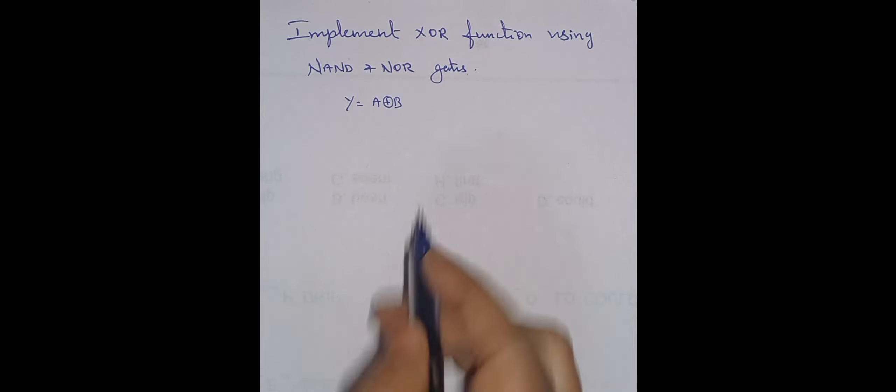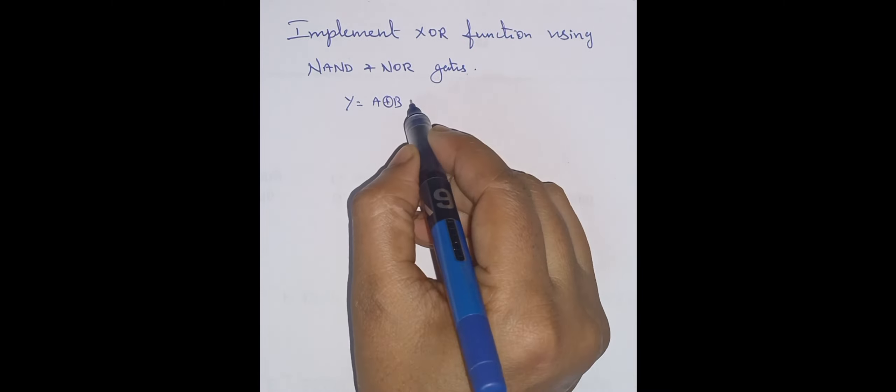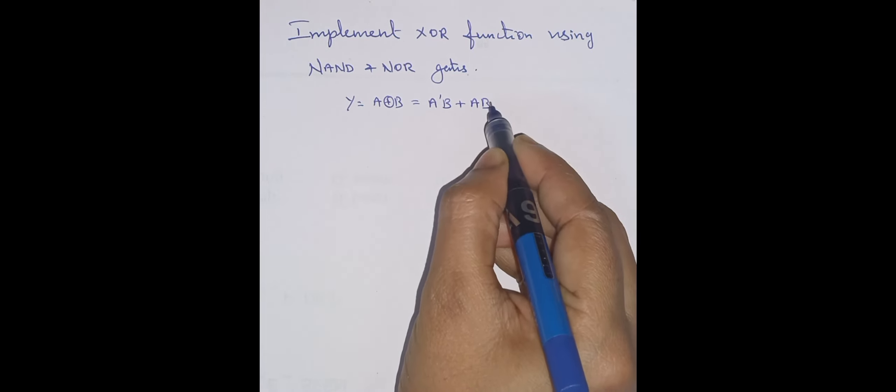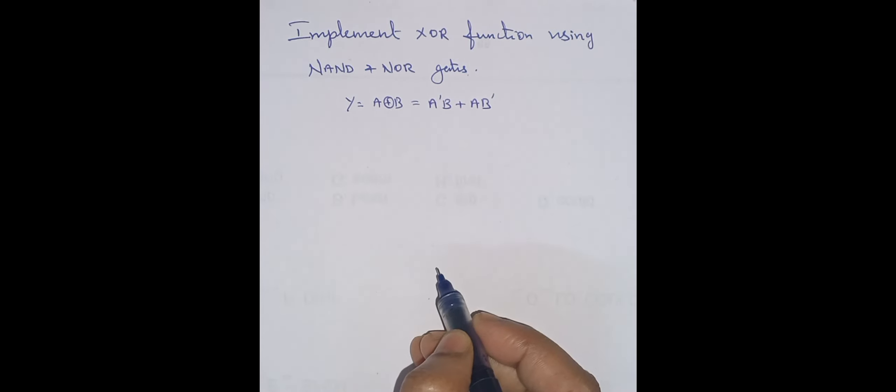Y is equal to suppose you take A exclusive OR B. The equivalent expression is A dash B plus AB dash. For this expression only, we are going to draw AOI logic.